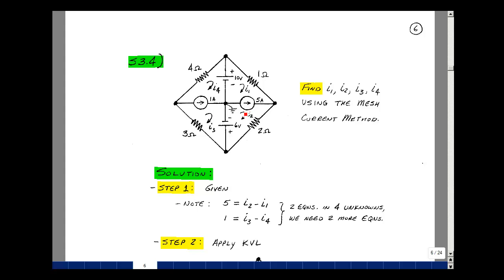Now I have current sources in my circuit besides resistors and voltage sources. I know that any current in this circuit is related to the mesh currents. There must be some relationship between this 1-amp and 5-amp source and the mesh currents 1 through 4.